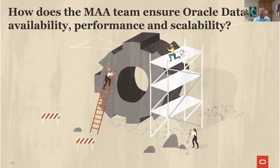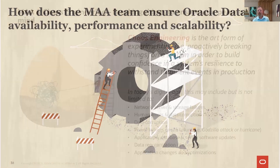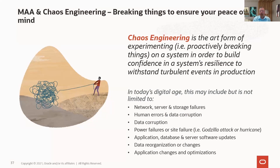How does the MAA team ensure availability and performance scalability? I mentioned 40-plus individuals. The technique they use is something called chaos engineering — essentially, we're breaking things to ensure your peace of mind, breaking things ahead of time. This team has the fun job of causing events, whether likely or unlikely, in combinations that might happen simultaneously and be catastrophic. We ensure that these happen on a regular basis in our testing center to ensure that our failover and high availability work properly. We put our systems through very turbulent events to do so.